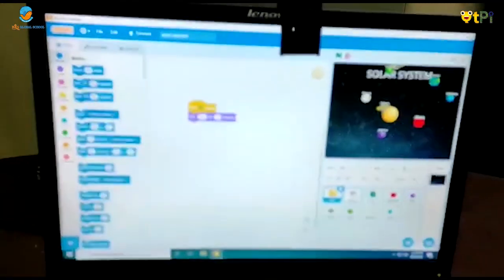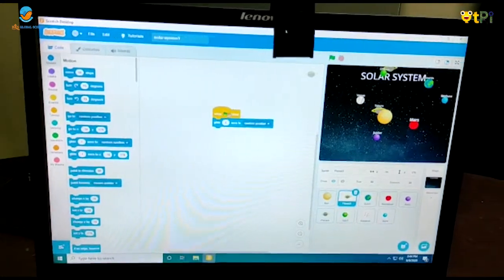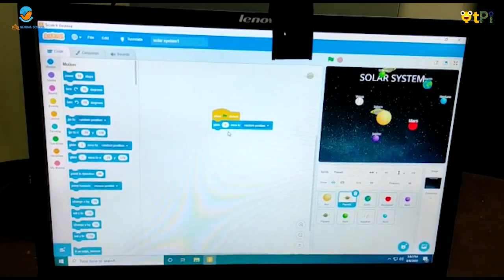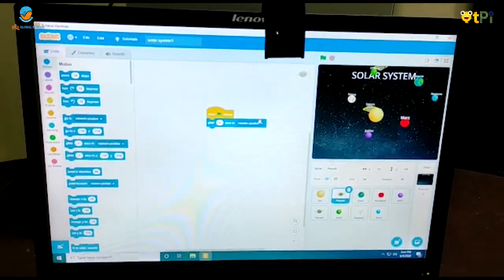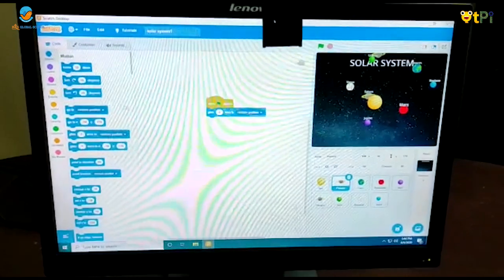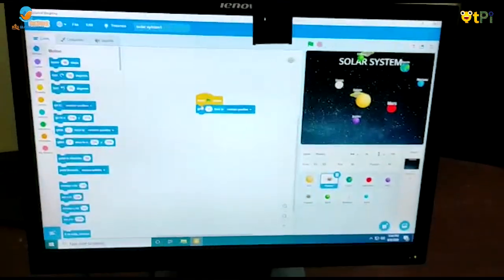And for other planets, when flag clicked, glide 5 seconds to random position. I used event block and motion block.